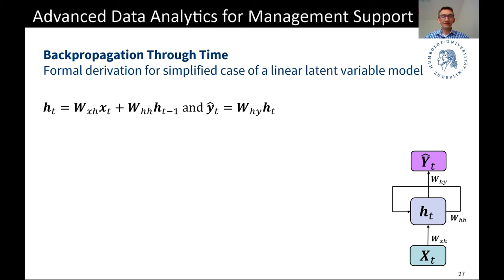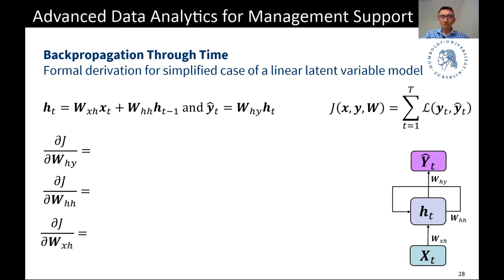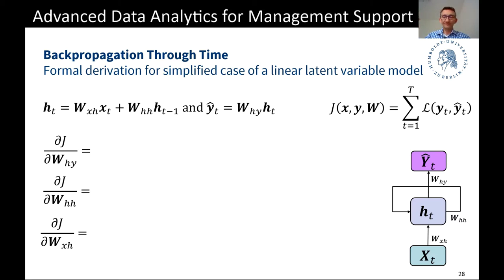Let's try now to write down some equations for the relevant gradients. First, we need some measure of the loss — I'll use the general symbol L, which could be squared error loss or cross entropy. The relevant derivatives are those we need to calculate the gradient update for gradient descent. These are the cost function with regard to the weights, and we have three sets of weight matrices: W_HY, W_HH, and W_XH. These three derivatives are what we really need to do backpropagation in our linear latent variable model.